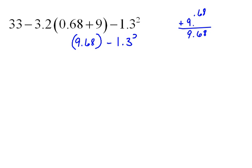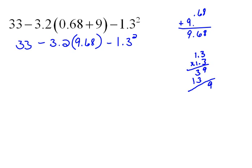Now, even though we still have a parentheses, there's nothing left to do inside it. So we do our exponents next: 1.3 squared means 1.3 times 1.3. We moved 1, 2 decimal places, so we move 2 places back in. That gives us 1.69. I'll recopy everything else.